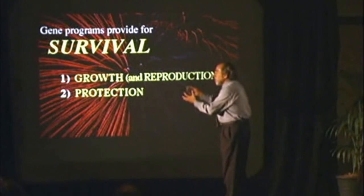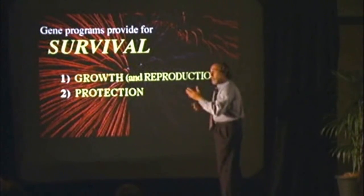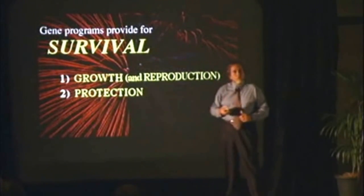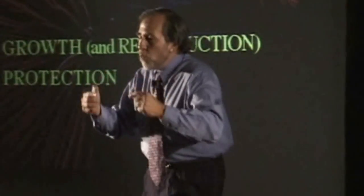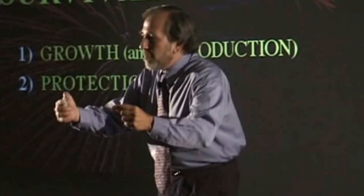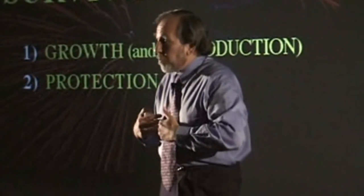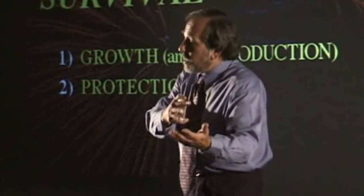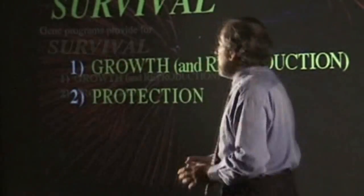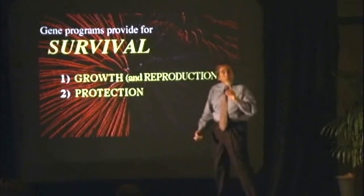One class is for growth and reproduction, which is a form of growth, and the other is for protection. The bottom line is this: when you walk into the environment, you're either going to select growth programs or you're going to select protection programs. And I'm going to explain why it's an either-or.